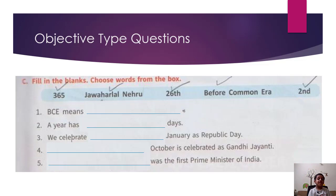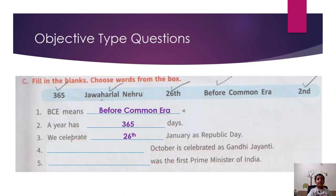C: Fill in the blanks. Choose words from the box. BC means Before Common Era. A year has — a year has 365 days. We celebrate — January as Republic Day, so the answer is 26th. And then — October is celebrated as Gandhi Jayanti, so the answer is 2nd October.